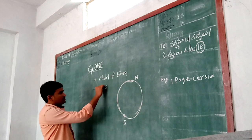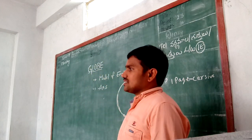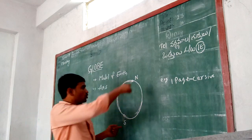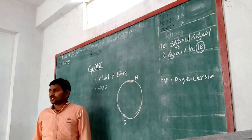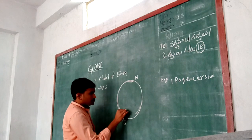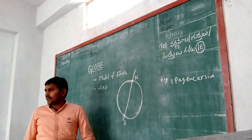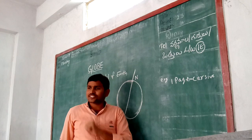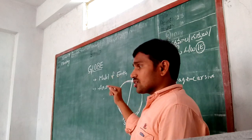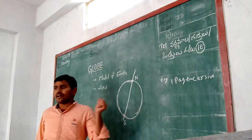Next, you have to know axis. What is an axis? An axis is an imaginary line which connects two poles through the interior of the earth. See — this is the axis. The axis connects the south pole and the north pole through the interior part of the earth.